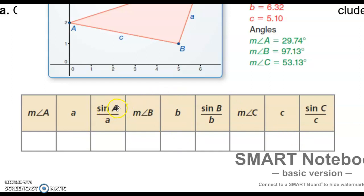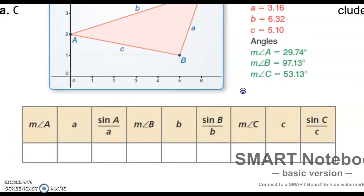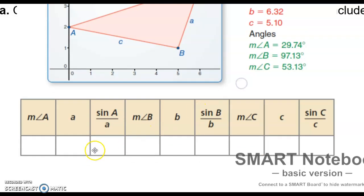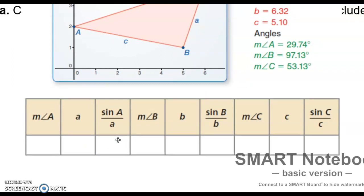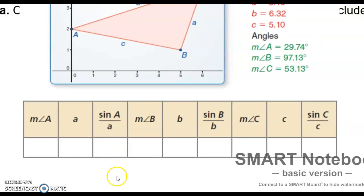Then take sine of A and divide it by A. You're going to take the sine of A, and I'll help you with this first one. Sine of A, which is sine of 29.74, and you're going to divide it by 3.16. You're going to get a decimal value and I want you to write that in right there. Go ahead and complete this whole table, and when you've got it completed, then turn on the video.